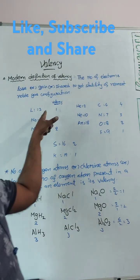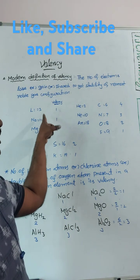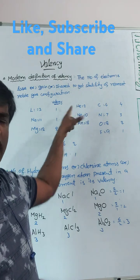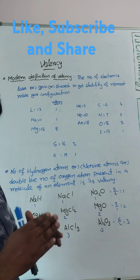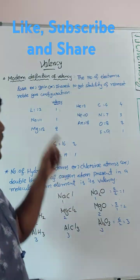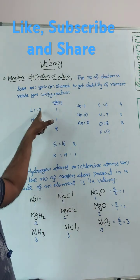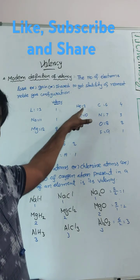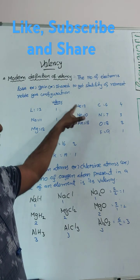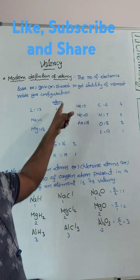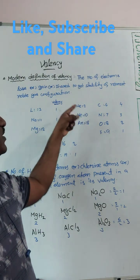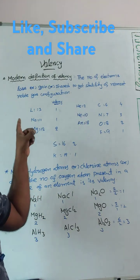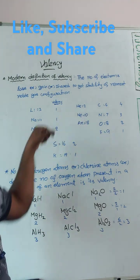For example, Lithium has atomic number 3. If you consider Helium as the nearest noble gas, Lithium should lose one electron, because Lithium has three electrons and Helium has only two. So if it loses one electron, it will get the stability of Helium. Therefore, Lithium's valency is 1.